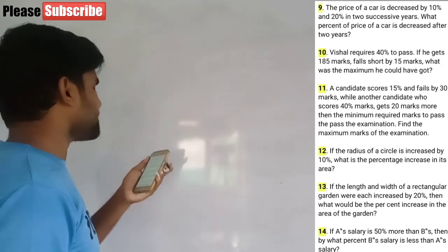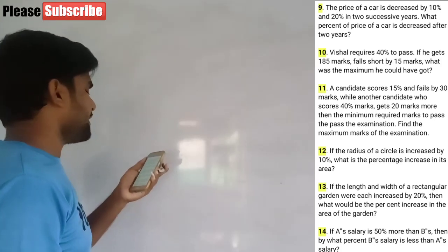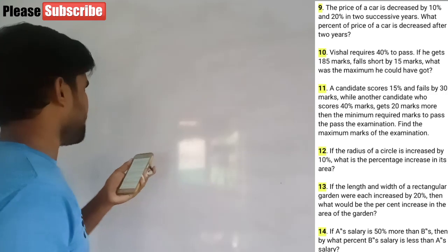Question 12: if the radius of a circle is increased by 10%, what is the percentage increase in its area?